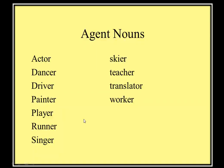Here are examples of Agent Nouns: Actor, Dancer, Driver — the person who drives anything. Painter — the person who paints. Player, Runner, Singer, Skater, Teacher, Translator, Worker. They are all doing some certain job or work. We give a name based on whatever work they are doing. That is known as Agent Nouns.